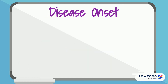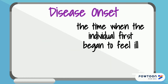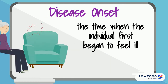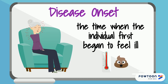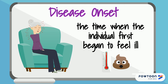Disease onset is the time when the individual begins to feel ill and is often associated with the first symptom of illness, such as fever, diarrhea, or rash. Remember that people can carry a disease without feeling ill — this is called asymptomatic. For certain diseases, even if a person doesn't feel sick, they may still be able to transmit disease to others.